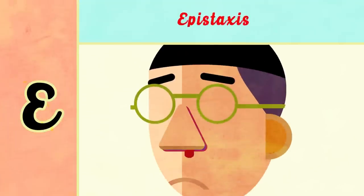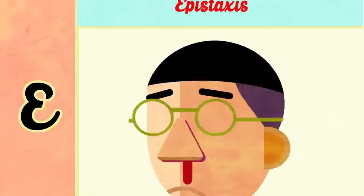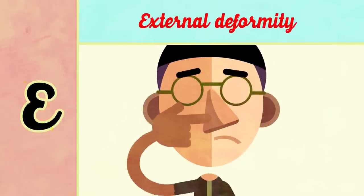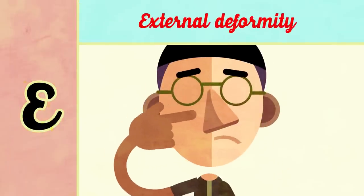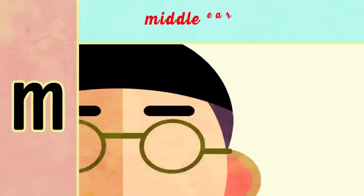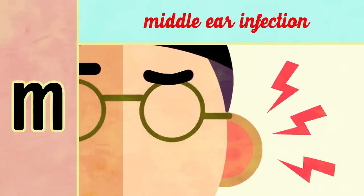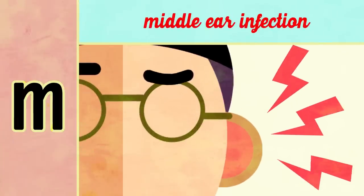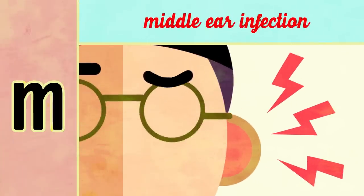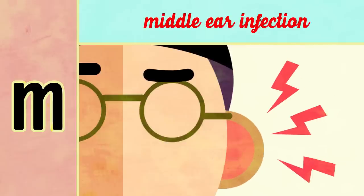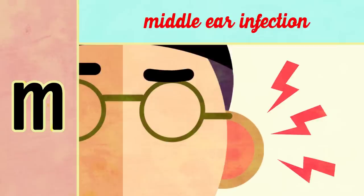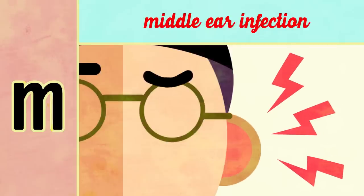E is for epistaxis. E is also for external deformity, particularly in young females or males who are more conscious of this. M is for middle ear infection: DNS also predisposes to middle ear infection because the Eustachian tube, which is the only drainage source of the middle ear, opens in the nasopharynx, and DNS can cause its obstruction, resulting in middle ear infections.